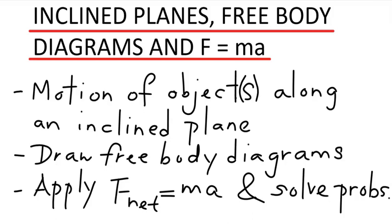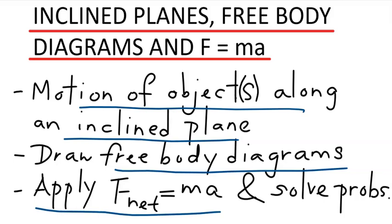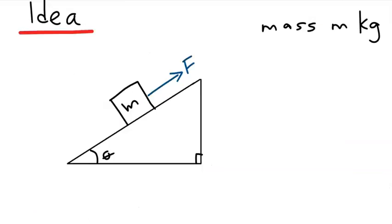In this video, we will analyze motion of objects along an inclined plane. In particular, we will sketch free-body diagrams for these objects, and we will apply Newton's second law, F equals MA, and solve for the variables that need to be found. To get an idea of how to sketch a free-body diagram for an object moving along an inclined plane, let's look at the following setup.